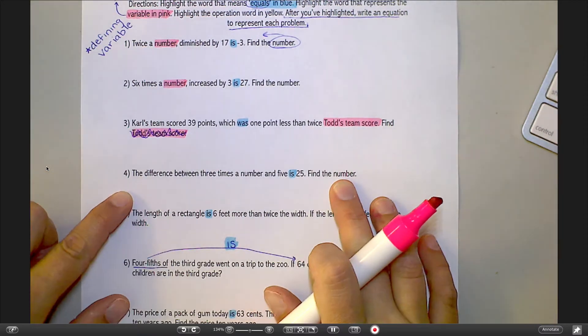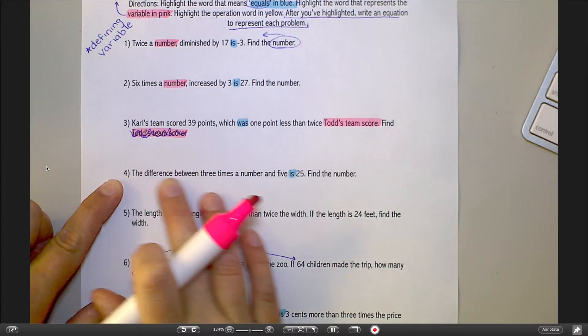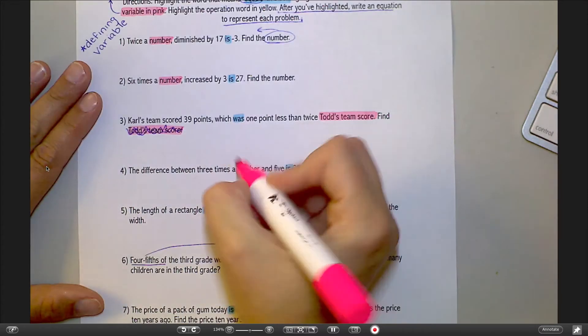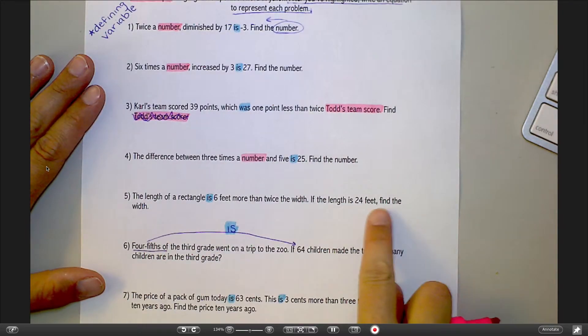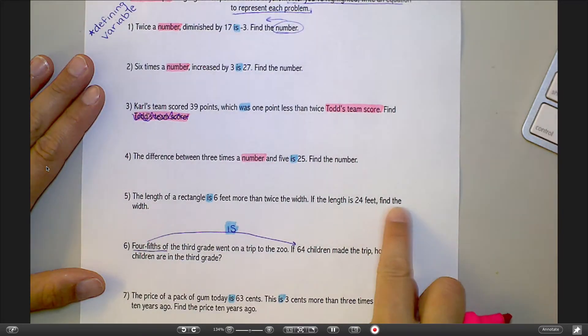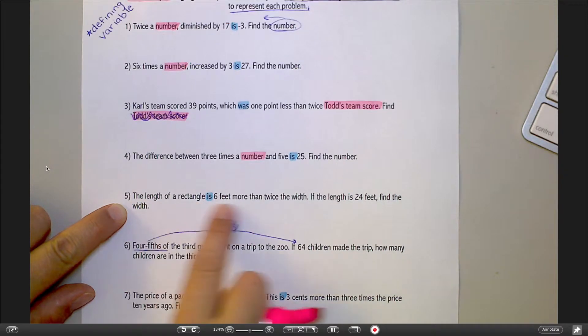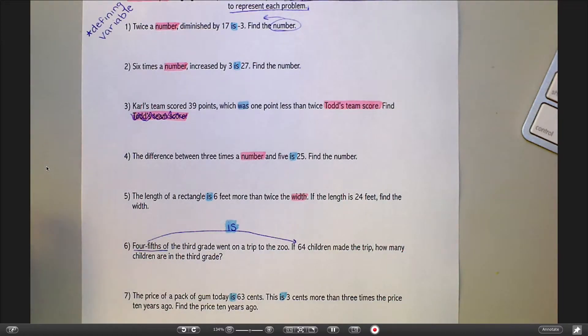Number 4. Skip to the end of the problem. I'm trying to find the number. So when I read the problem setup, there's that number that I don't know. That's my thing I'm trying to find. At the end of this problem, number 5, it says find the width. So the width is my variable. I'm going to read through the rest of the problem and highlight the width.